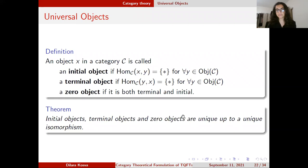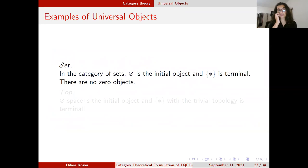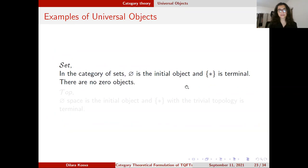Some examples: in the category of sets, the empty set is the initial object — you can map it with the empty function to any other set and it is well-defined. Every set can be mapped to the singleton by sending each element to the single point, and there is exactly one such function, so the singleton is the terminal object. Since the empty set and the singleton cannot be the same, there is no zero object in sets.